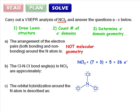Now we can see that there are one, two, three, four electron domains. This corresponds to a tetrahedral geometry.